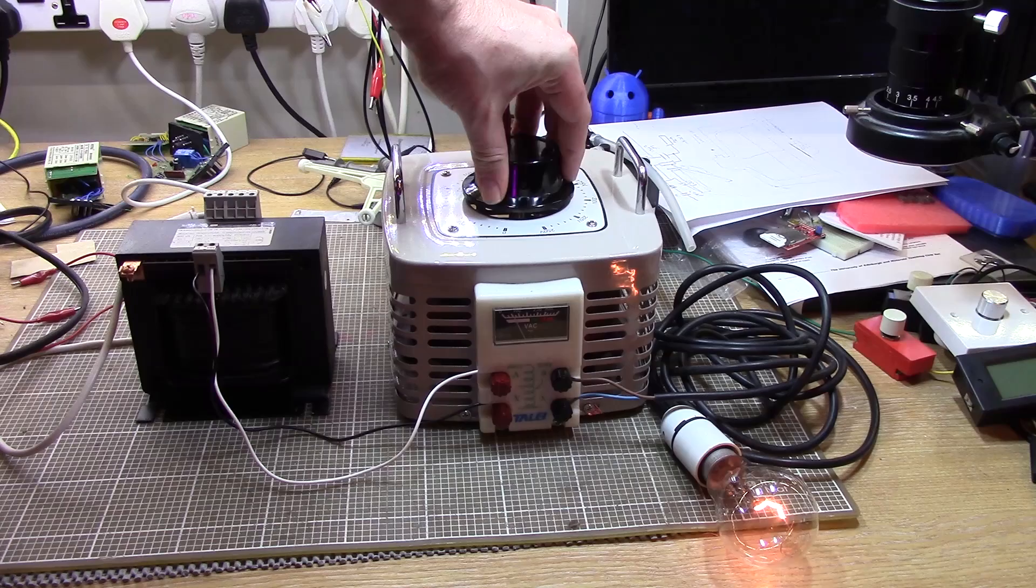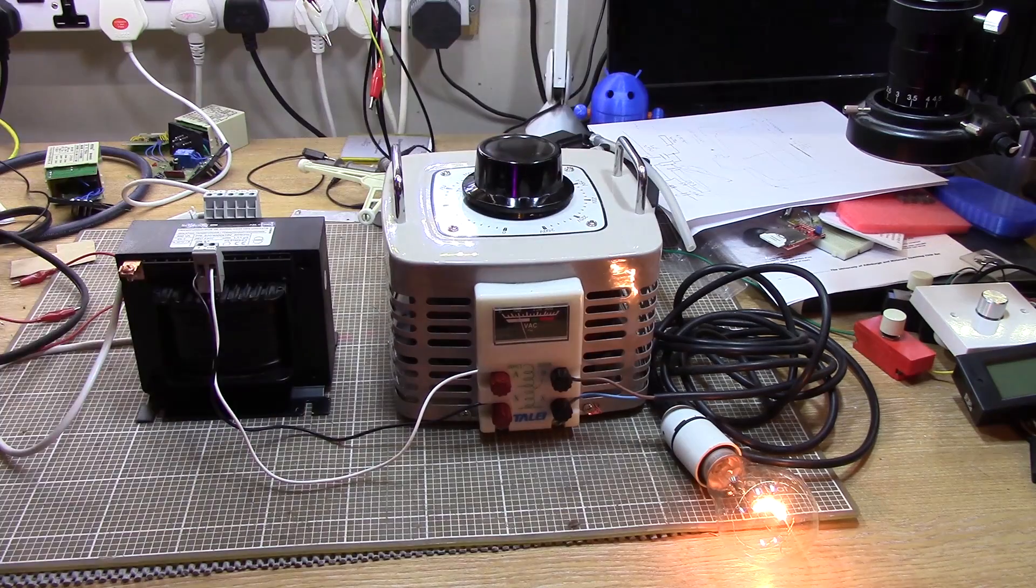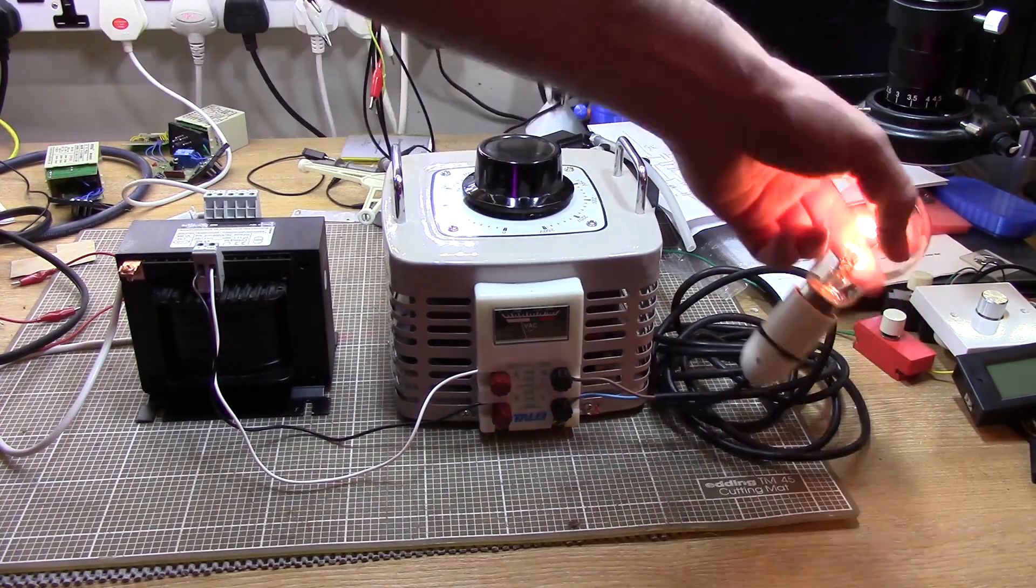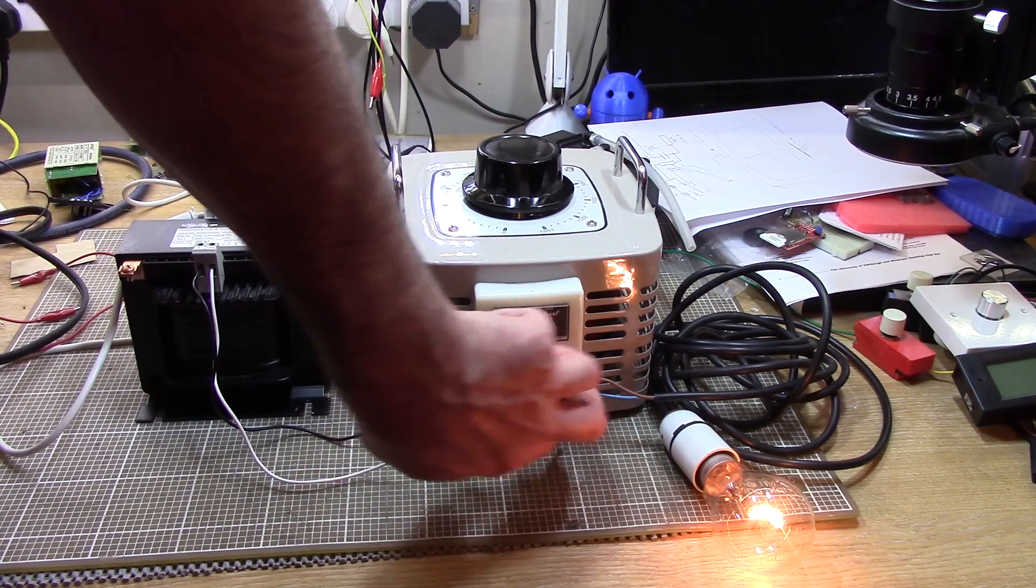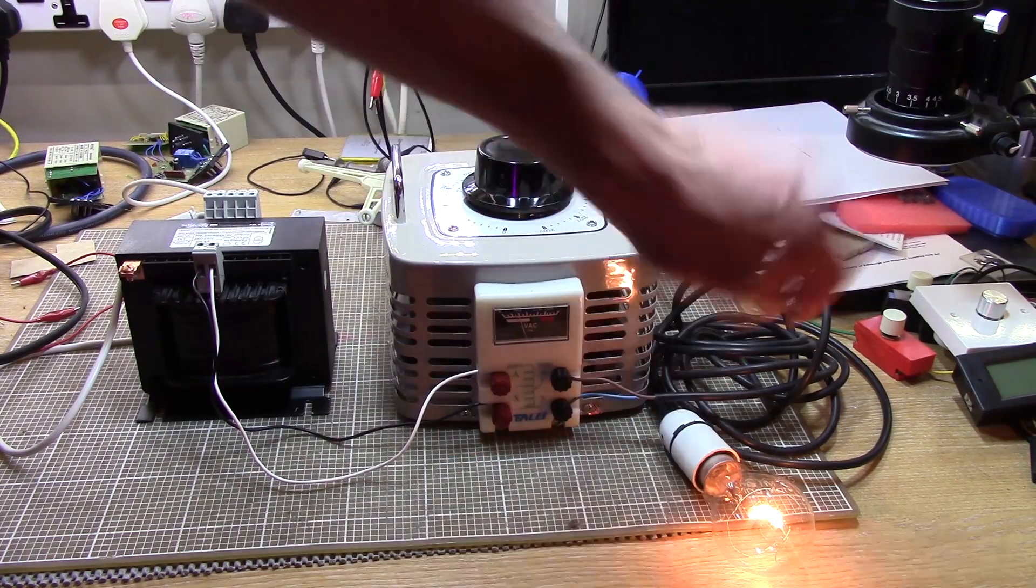So just a quick demo, there we are, we've got a 240 volt light running on about 100 volts, and it's reasonably safe in that I have to touch both wires to electrocute myself rather than just any single wire.